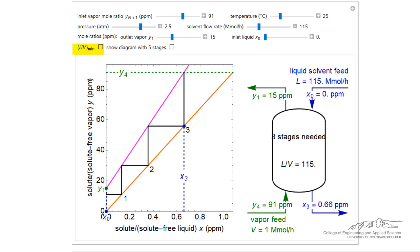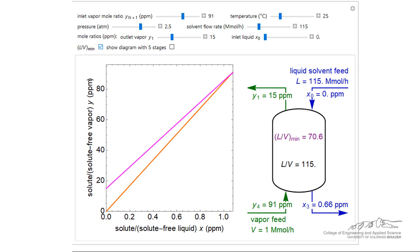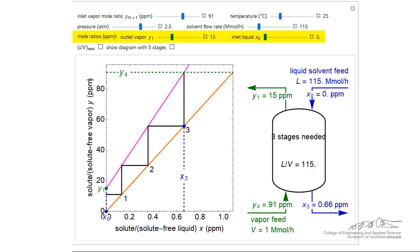The minimum liquid flow rate, L over V min, can be obtained by the slope of the operating line when it touches the equilibrium line. The anchor points for the operating line are the ordered pairs for the liquid and vapor compositions at the top and bottom of the column.